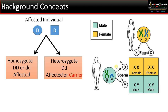This next concept is very important for solving sex-linked inheritance problems. In males, the X chromosome is received from the mother and Y chromosome from the father. In females, one X chromosome is received from the father and one X chromosome from the mother.